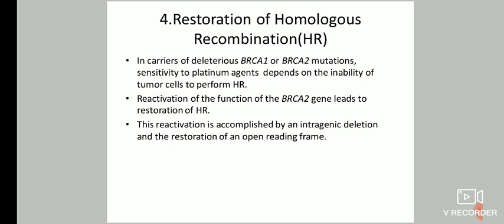Another mechanism is the restoration of homologous recombination. In carriers of deleterious BRCA1/BRCA2 mutations, sensitivity to platinum agents depends on the inability of tumor cells to perform homologous recombination. Reactivation of BRCA2 gene function leads to restoration of homologous recombination, accomplished by an intragenic deletion and the restoration of an open reading frame.